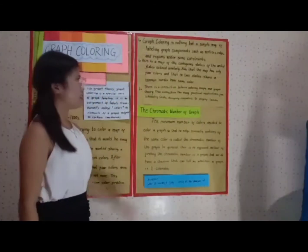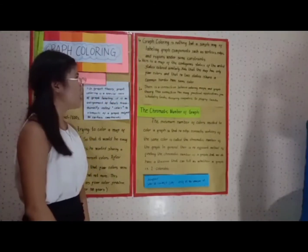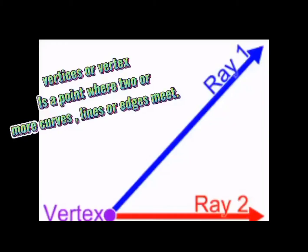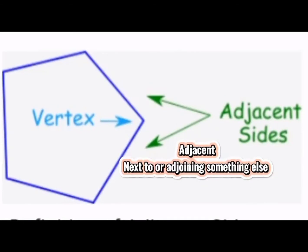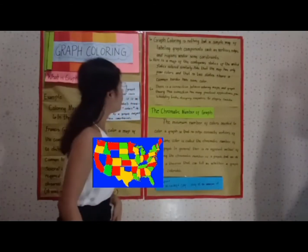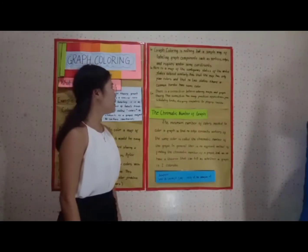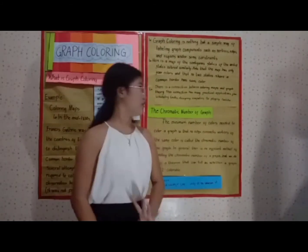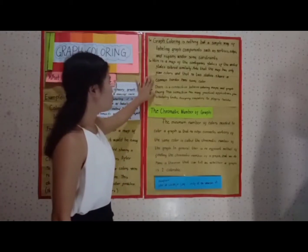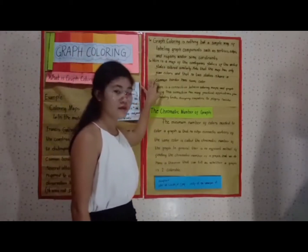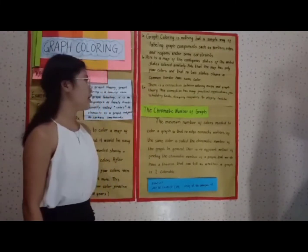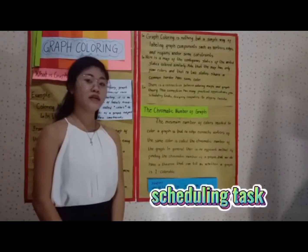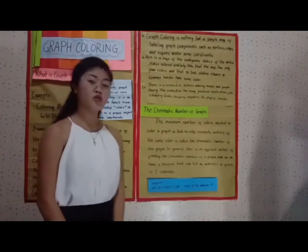Graph coloring is nothing but a simple way of labeling graph components such as vertices, edges, and regions under some constraints. Here is the map of the contiguous states of the United States colored similarly, such that the map uses four colors and no two states sharing a common border have the same color. There is a connection between coloring maps and graph theory, with many practical applications from scheduling tasks to designing computers.